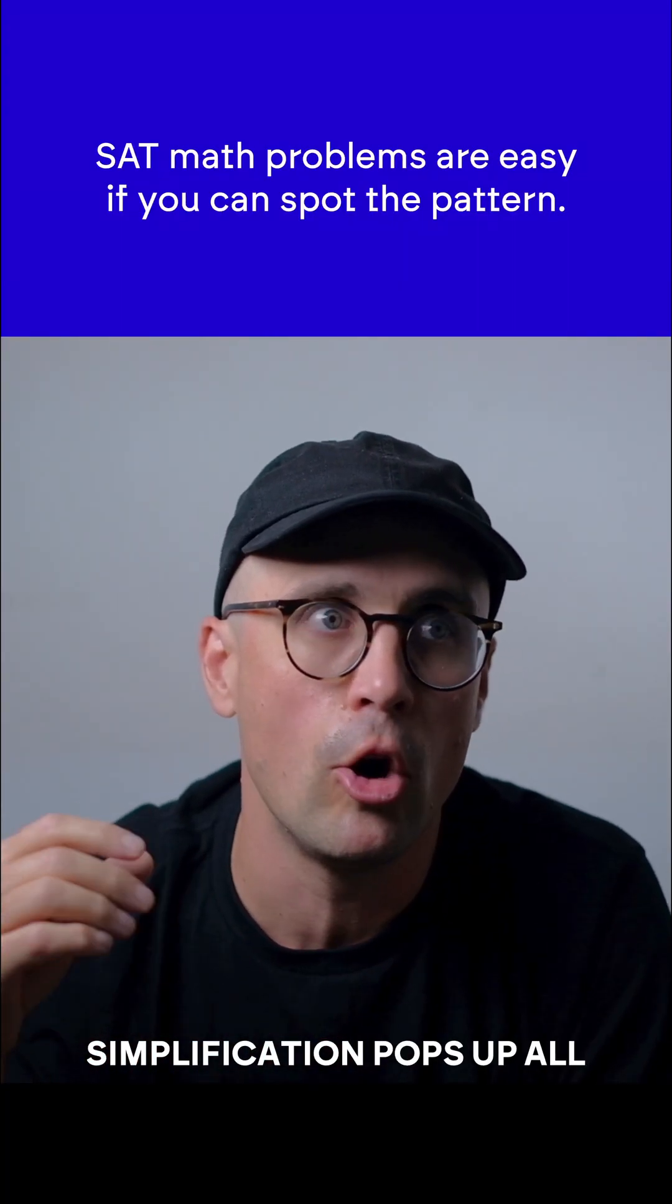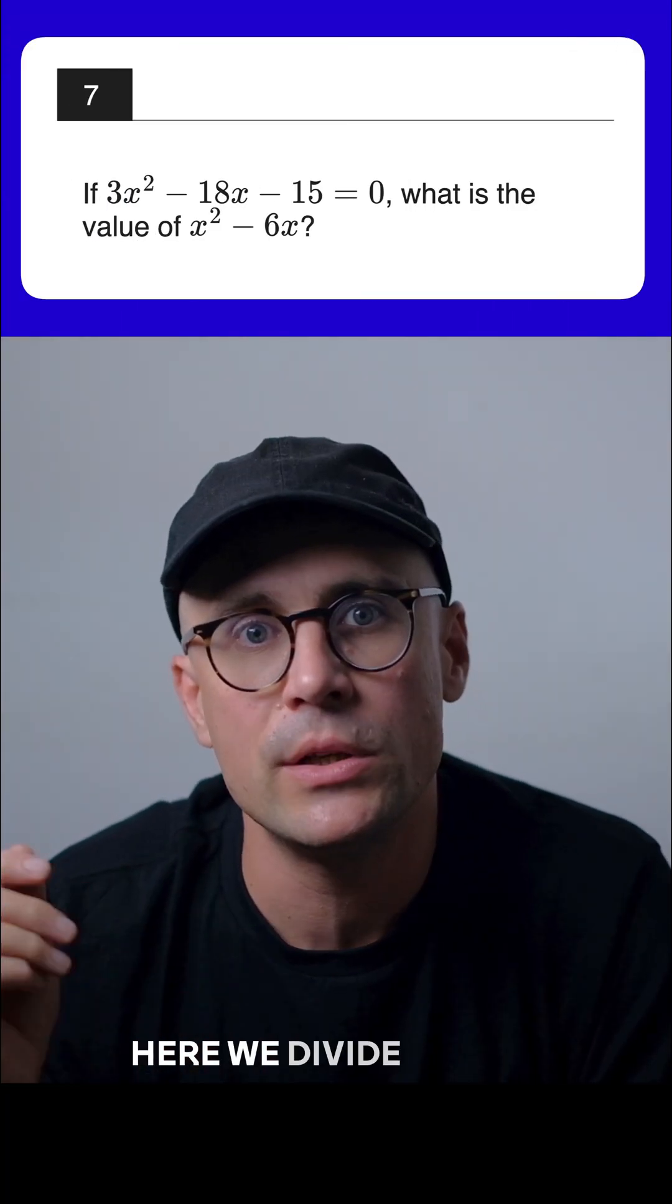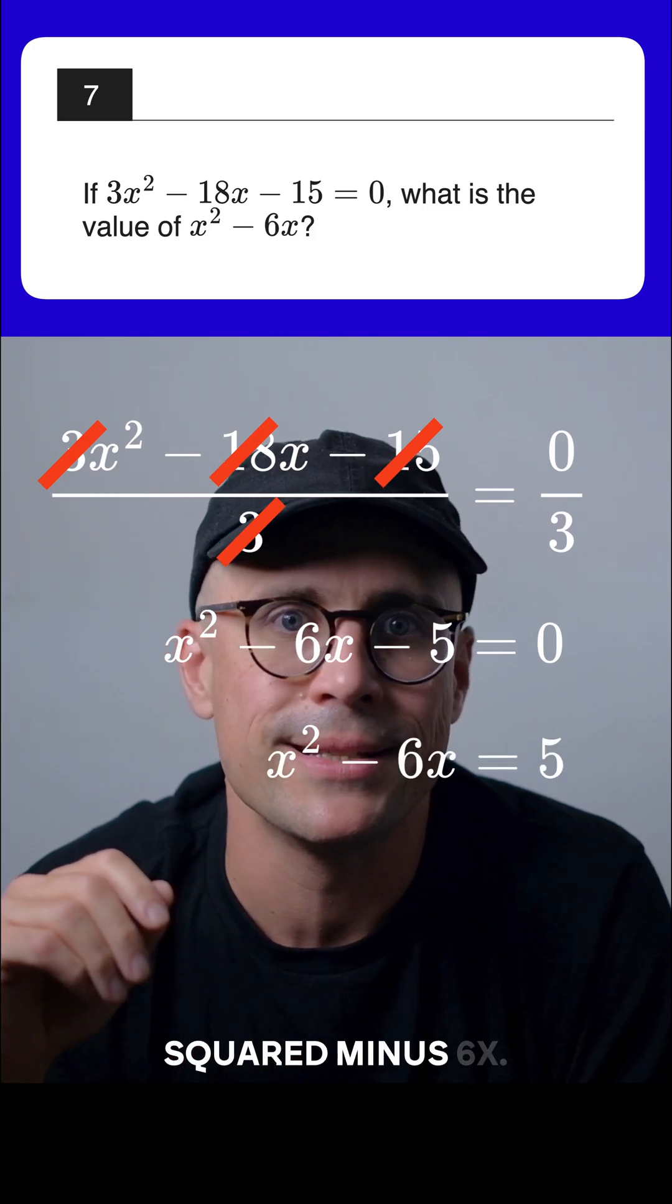This type of simplification pops up all the time on the SAT. Here we divide by 3 to solve directly for x squared minus 6x.